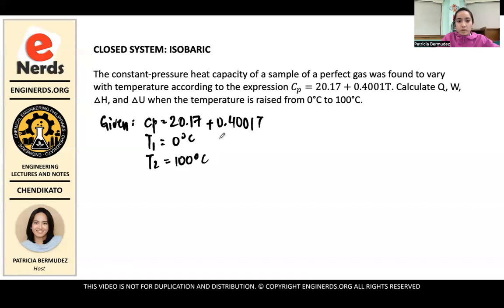And then we know that T1 is 0 degrees Celsius and T2 is equal to 100 degrees Celsius. In this problem, your CP is not just a value. It's a function of something. And in this case, it's temperature. So what we'll do is we're going to use some integration to get the CP that is in accordance to the change in temperature given in this problem.